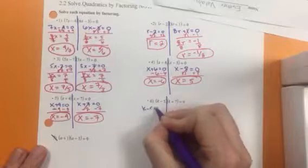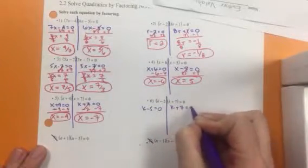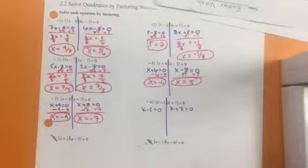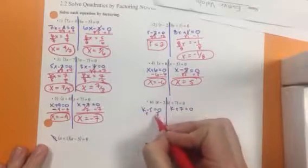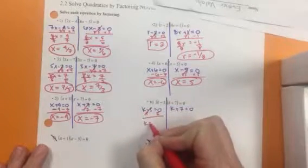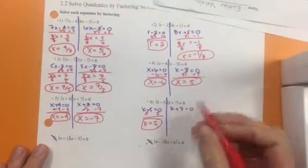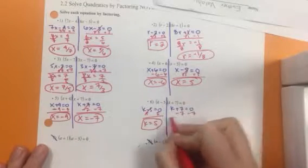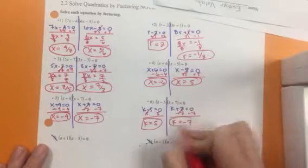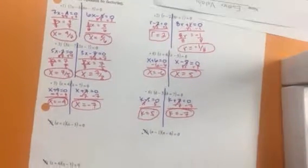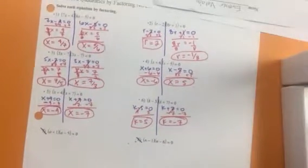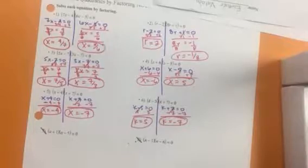k minus 5 equals 0. k plus 7 equals 0. Add 5 to both sides. Minus 7 to cancel that out. And we get k equals negative 7. So those are how we find solutions when they're already factored.